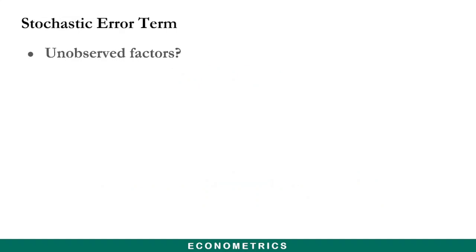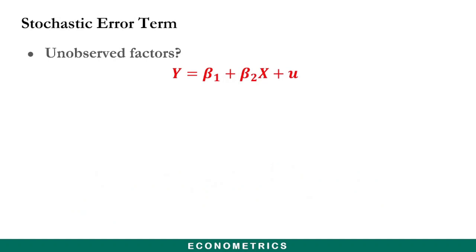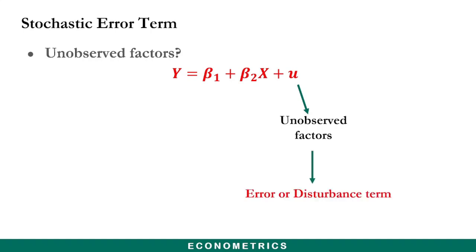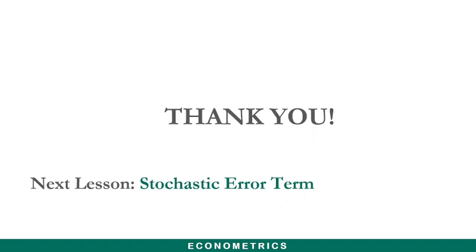You have also been seeing the unobserved factors in an econometric model, which is represented by the u parameter. This u is called the unobserved factors, representing any other factor that can also affect the dependent variable. These unobserved factors in an econometric model can also be referred to as the error or disturbance term. In the next lesson we shall look at the significance of the stochastic error term found in econometric models.